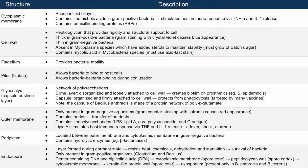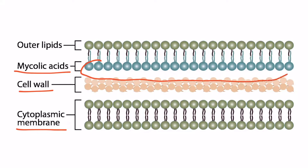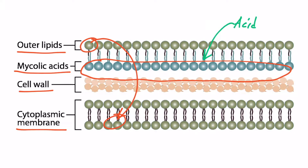The last detail about the cell wall is that Mycobacteria species, such as Mycobacterium tuberculosis or Mycobacterium leprae, contain mycolic acids. This figure depicts Mycobacteria. It has a cytoplasmic membrane, then a cell wall that's thin, much like gram-negative bacteria, and attached to this thin cell wall are mycolic acids. Opposite these mycolic acids are outer lipids, which are more reminiscent of phospholipids. It's these mycolic acids that bind the acid-fast stain for Mycobacteria.